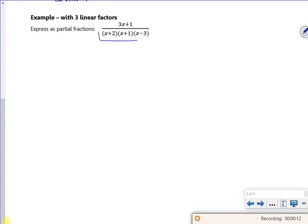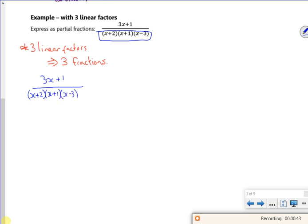So if you look, I've got three linear factors this time. So I'm going to have three fractions. Each one gets its own letter. So I've got A over the first factor, B over the second factor, C over the third factor.